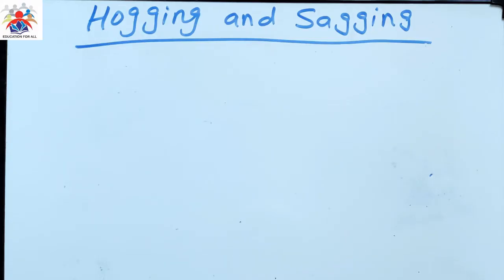Hello and welcome to my YouTube channel. In this video, I am going to explain what is hogging and what is sagging. Hogging and sagging are terms which are used to describe the shape that a beam or similar long object will deform into when loading is applied.